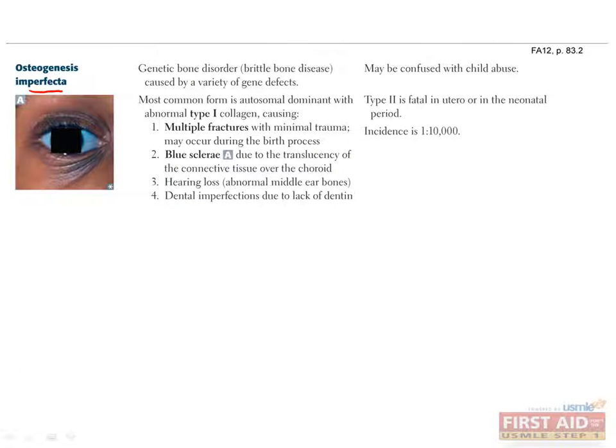Osteogenesis imperfecta is one of the most common deficiencies in collagen synthesis, occurring in about 1 in 10,000 people. Consequently, it's also the most commonly tested. It's also known as brittle bone disease, since it prevents the synthesis of type 1 collagen, which is a key component of bones. Since there are several different genes involved in collagen synthesis, there are a variety of gene defects that can cause this disease. The most common viable form is autosomal dominant, but another form, called osteogenesis imperfecta type 2, is fatal in utero or shortly after birth.